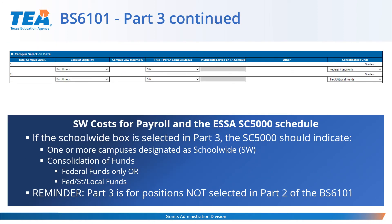If the school-wide checkbox is selected in Part 3 of the BS6101, the SC5000 should indicate one or more campuses designated as school-wide and consolidation of funds. This consolidation is indicated by selecting either federal funds only or federal, state, and local funds in the SC5000. As a final reminder about Part 3, please note that this section is for positions not selected in Part 2.